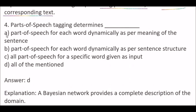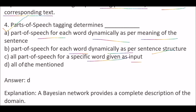Next question: parts of speech tagging determines — Options are: A) Part of speech for each word dynamically as per meaning of the sentence, B) Part of speech for each word dynamically as per sentence structure, C) All parts of speech for a specific word given as input, D) All of the mentioned. The right answer is option D, all of the mentioned.